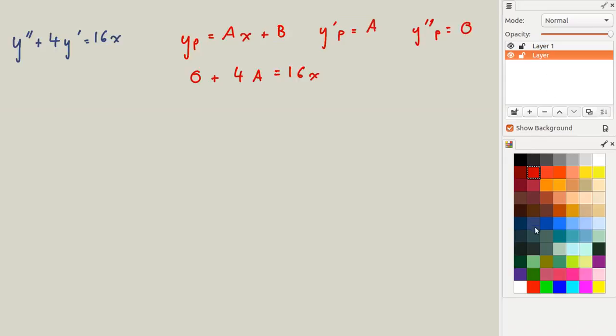So what we're actually going to do is we're going to take our yp and set it equal to ax squared plus bx. Subsequently, the derivative of that is 2ax plus b, and y double prime of p is equal to 2a.